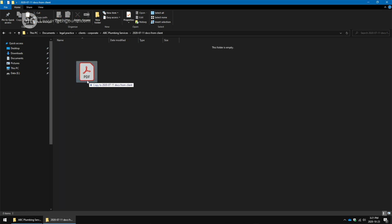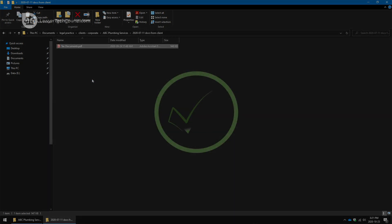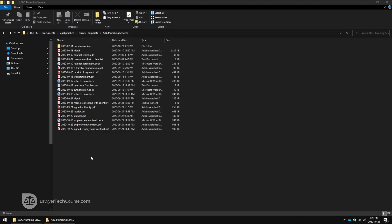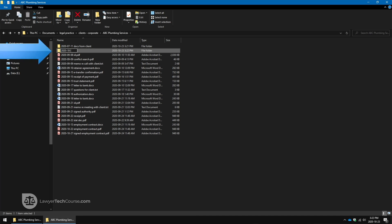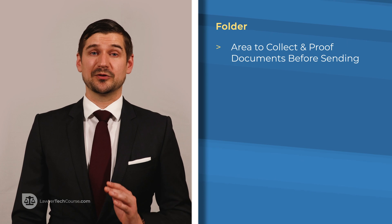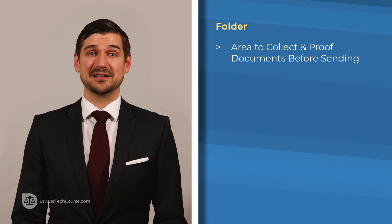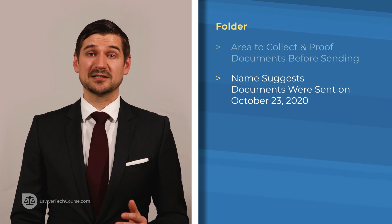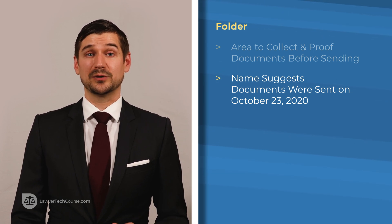When storing files in a folder in this way, I can simply leave the files with the name that the sender gave them. Before I send digital files to recipients by email, I would stage them using a similar system. For example, if I sent a letter to a lawyer named Kelly Brown on October 23rd, 2020, I'd first place the documents in a folder entitled 2020-10-23 docs to Kelly Brown. By taking this step, I have a place to collect my documents and ensure that they're complete and correct before sending them. Further, if I see the folder in the future, its name will suggest that the contents were sent to Kelly Brown on October 23rd, 2020.